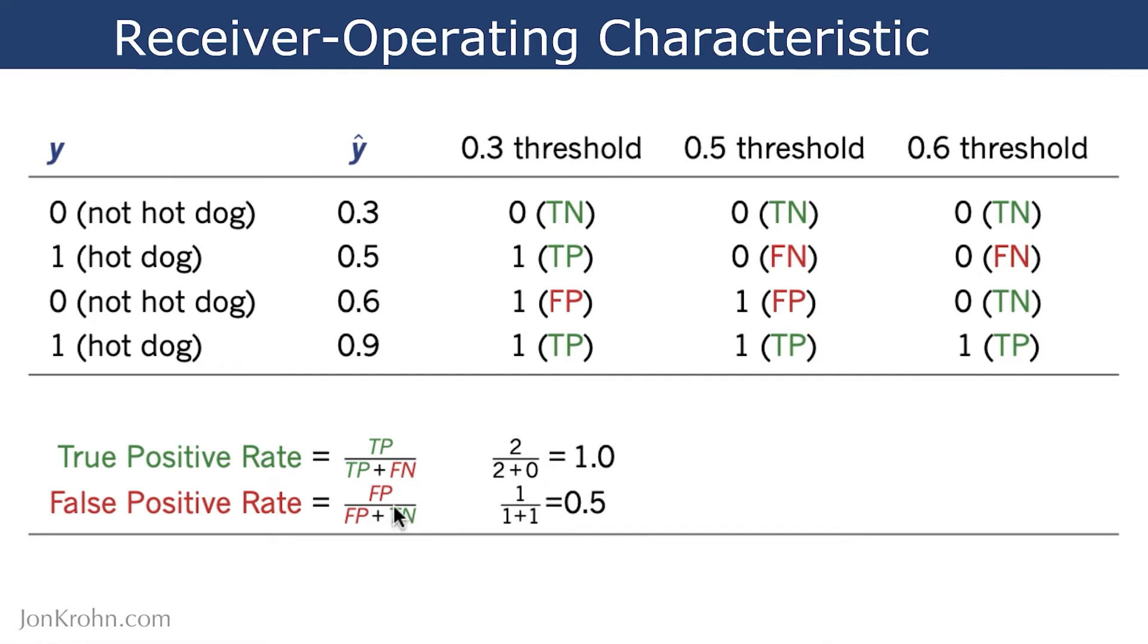The false positive rate is given by false positives over false positives plus true negatives. Altogether, these two rates capture all four of the possible situations. So true positive, false negative, true negative, false positive. Those are the four possible outcomes. And they're all captured in these two rates.